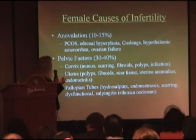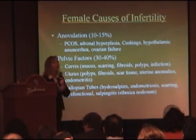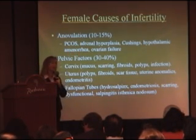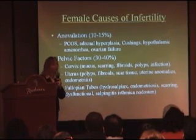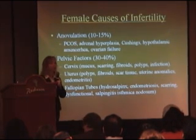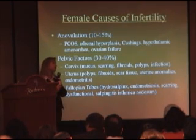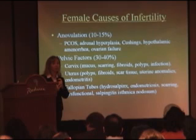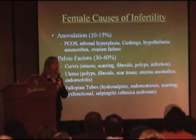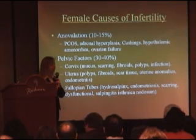Hypothalamic amenorrhea is where the brain — up top in the hypothalamus — is saying that now is not a good time to get pregnant. We will be going into this in much more detail. And lastly, ovarian failure. Ovarian failure can occur at any age. Someone may not even go through puberty because their ovaries aren't working, or they may just go through puberty and then their ovaries fail.